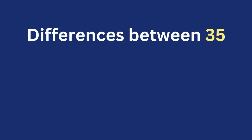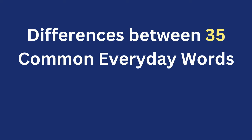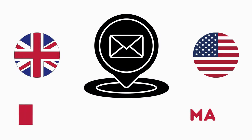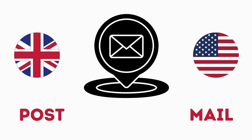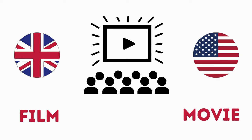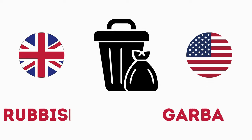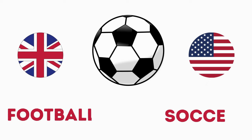Differences between 35 common everyday words in British and American English. Post versus Mail. Film versus Movie. Rubbish versus Garbage. Football versus Soccer.